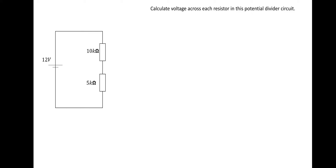The first question asks us to calculate the voltage across each resistor in a potential divider circuit. A potential divider is simply a circuit where the voltage is shared across components in a series circuit. We could find the current and then do voltage equals current times resistance for each resistor, which works fine.